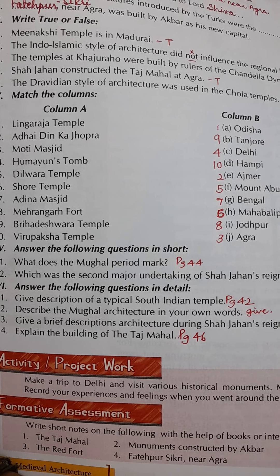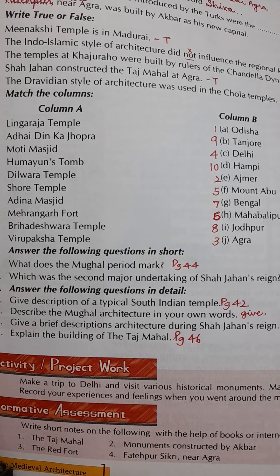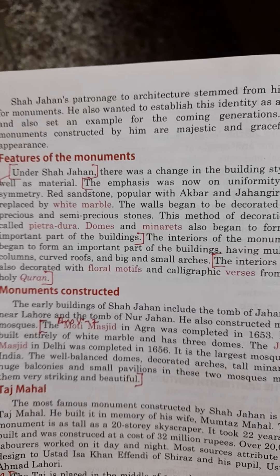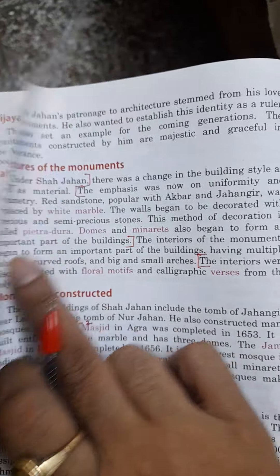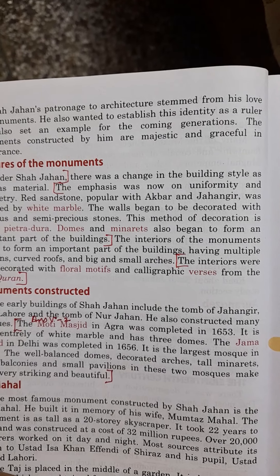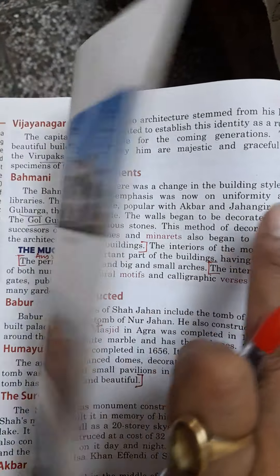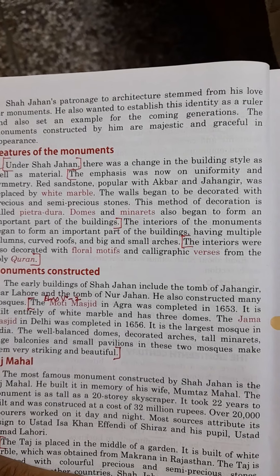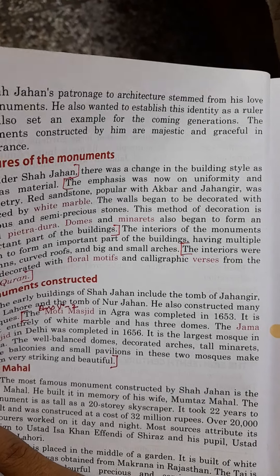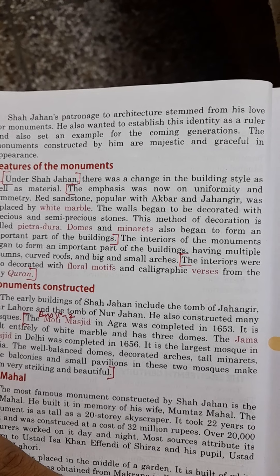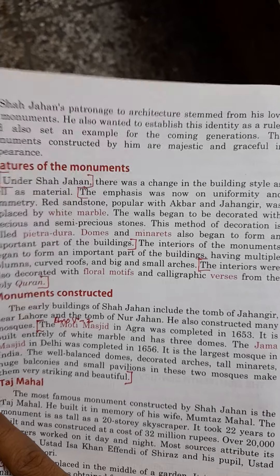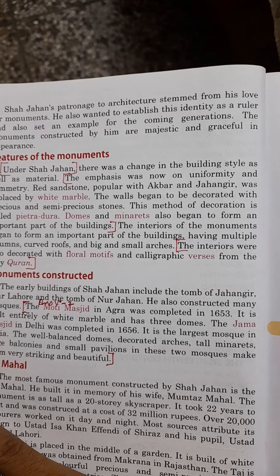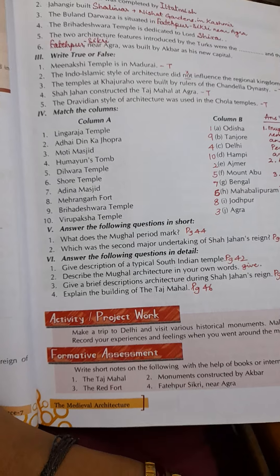Question 6.3: Give a brief description of architecture during Shah Jahan's reign. Page 46, under Shah Jahan: The emphasis was now on uniformity and symmetry. Red sandstone was replaced by white marble. The walls began to be decorated with precious and semi-precious stones — this method of decoration is called pietra dura. Domes and minarets also began to form an important part of the buildings. The interiors were also decorated with floral motifs and calligraphic verses from the Holy Quran.